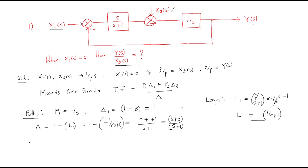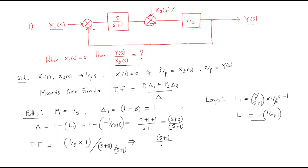From this we can write the transfer function. Transfer function = P1·Δ1 / Δ = (1/s × 1) / ((s+2)/(s+1)). Substituting, the transfer function equals (s+1) / (s(s+2)). This is the transfer function for Problem 1.